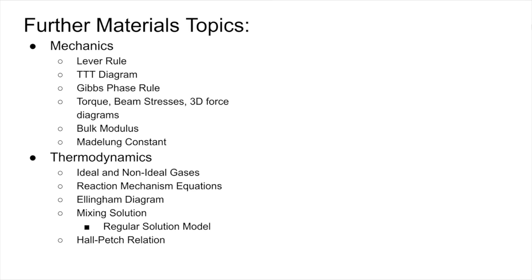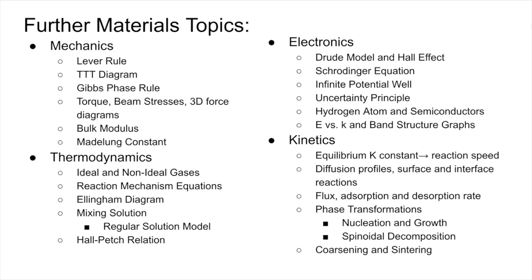Further material topics are listed here that I didn't cover, but are definitely important for a materials engineer to understand. For mechanics, I recommend familiarizing yourself with the Lever rule and the TTT diagram. Thermodynamics: understand the different models and the Hall-Petch relationship, which describes how grain size affects strength. For electronics: the Schrödinger equation, Drude model, uncertainty principle, and band structure graphs. For kinetics: the equilibrium K constant, nucleation and growth processing, diffusion profiles, and surface and interface reactions. All these topics come together to fundamentally understand how material mechanisms and properties are achieved for different design processes and applications.